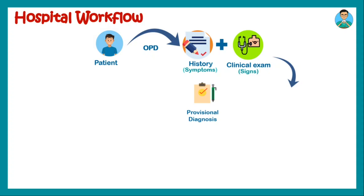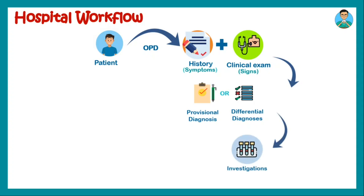If you are not very sure about a particular diagnosis and instead have a set of three or four diagnoses in mind, you write them down as the differential diagnosis. This provisional or differential diagnosis then has to be confirmed using certain investigations. After investigations, once the diagnosis is confirmed, we move towards the final diagnosis.